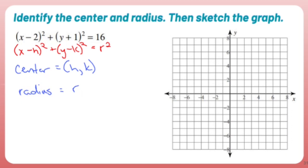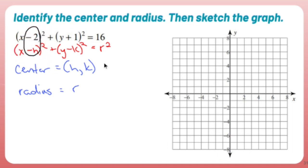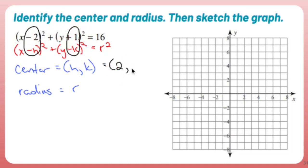So let's find the center first. The center is h, k. Negative h is negative 2, which means positive h is positive 2. So does that mean negative k is positive 1, which means positive k is negative 1? Yep.